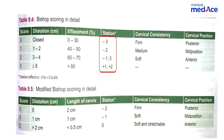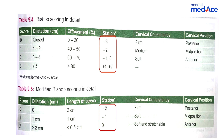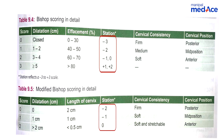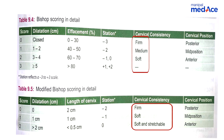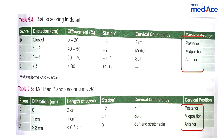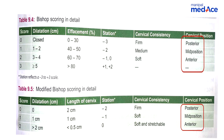Station starts from minus 3 in Bishop's and from minus 2 in modified Bishop's. Then minus 2, minus 1, and 0 or plus 1 are almost the same in both. Consistency is firm, medium, and soft in Bishop's; in modified it is firm, soft, and soft stretchable — there is nothing like medium in modified Bishop's. Cervical position is the same in both: posterior, mid position, and anterior.